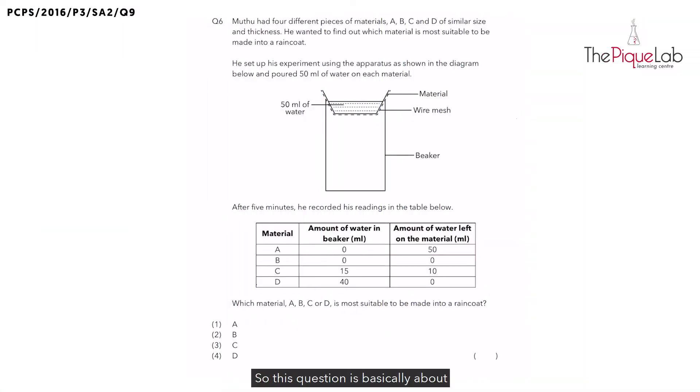So this question is basically about the absorbency of different materials. And we have four materials that are tested over here: A, B, C, and D. And what Mutu did was to pour 50ml of water on each material. And he recorded the amount of water inside the beaker and he also recorded the amount of water left on the material.